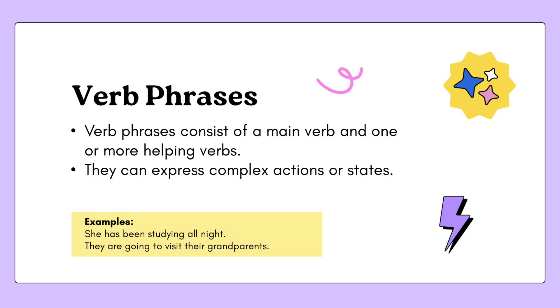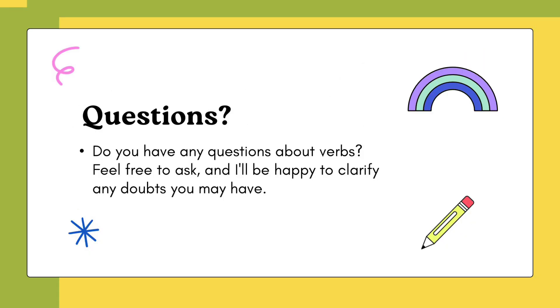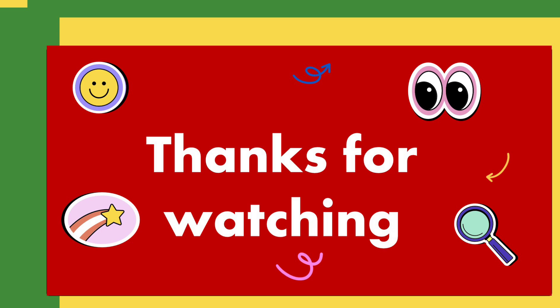Now let's study verb phrases. A verb phrase consists of the main verb and one or more helping verbs, and it expresses complex actions or situations. For example: 'She has been studying all night.' 'They are going to visit their grandparents.' That was all about today's lecture. If you have any questions, you can ask. Thank you so much for watching. See you soon. Take care of yourself.